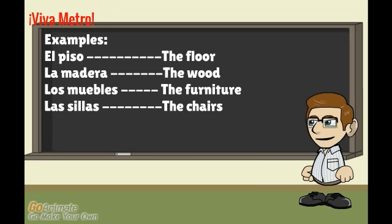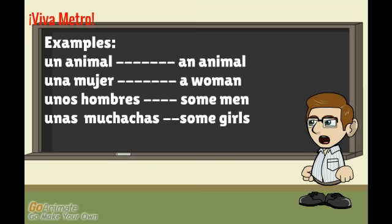Let's look at some examples. 'El piso' — the floor. 'La madera' — the wood. 'Los muebles' — the furniture. 'Las sillas' — the chairs. Note that the 'y' and double 'l' can make a 'ya' sound or a 'sh' sound. 'Un animal' — an animal. 'Una mujer' — a woman. 'Unos hombres' — some men. 'Unas muchachas' — some girls.